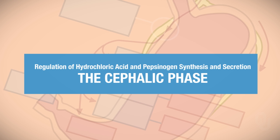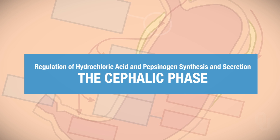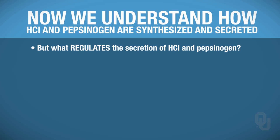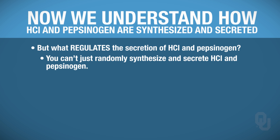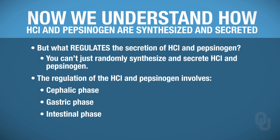Now that you know how hydrochloric acid and pepsinogen are synthesized and secreted, we're going to look at what regulates their synthesis and secretion, because you can't just randomly synthesize and secrete hydrochloric acid and pepsinogen. This regulation involves the cephalic phase, the gastric phase, and the intestinal phase. We're going to go through each of these phases.